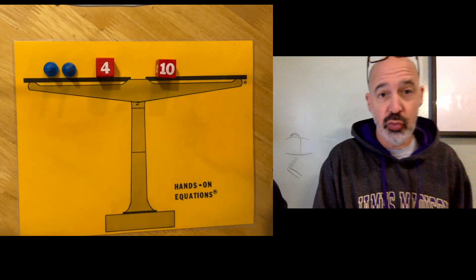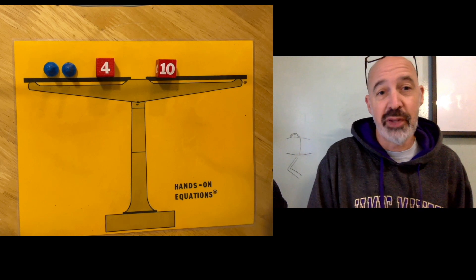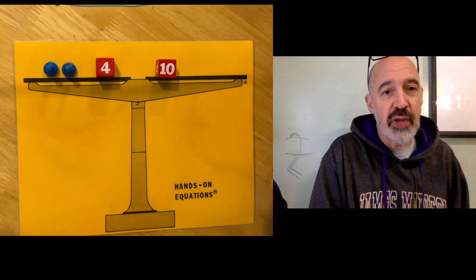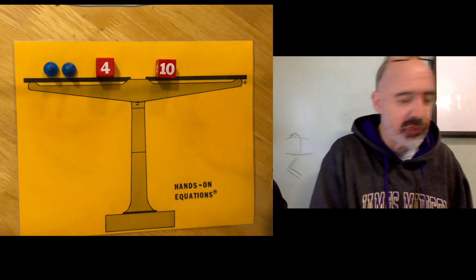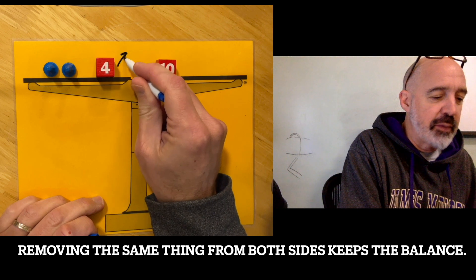Well one of the first rules to learn in hands-on equations and really in algebra is that you would want to do the same thing to both sides of the equation. Which in this case you would want to remove the 4 from both sides. So sometimes on the paper kids will draw arrows.